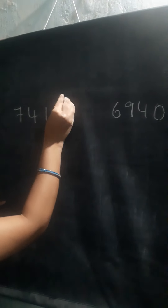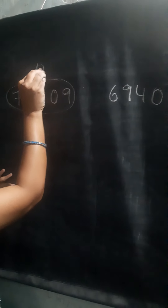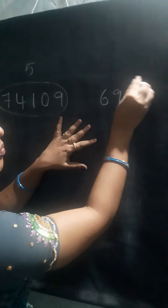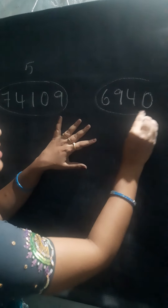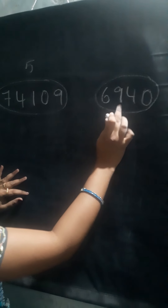How many digits are there for the first number? 1, 2, 3, 4, 5 — 5 digits. Coming to the second number, how many digits are there for this number, children? 1, 2, 3, 4 — 4 digits.